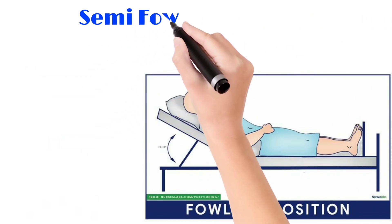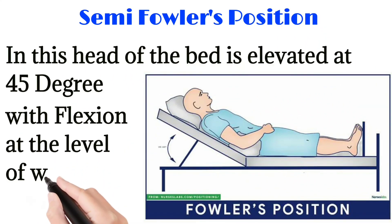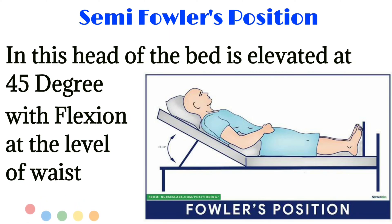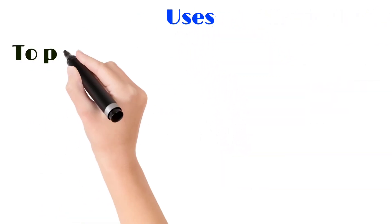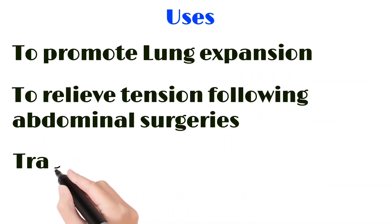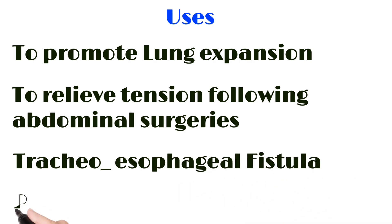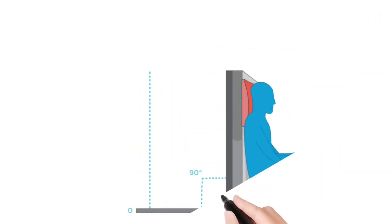Next is the Fowler's position, also called semi-Fowler's — the head of the bed is elevated 45 degrees with flexion at the level of the waist. This is used in cases of respiratory difficulty and dyspnea. Uses include to promote lung expansion, relieve tension following abdominal surgery, tracheoesophageal fistula, and paracentesis.